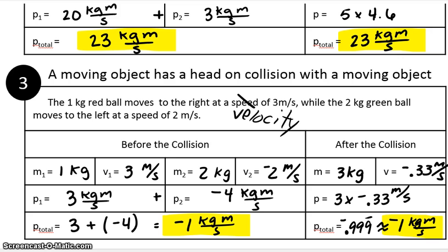Think about it this way: imagine you have $5 in your pocket and your friend has no dollars. You give your friend $3, so now you have $2 and your friend has $3 — there's still $5 accounted for. None of the money was lost. It just changed from one person to another, but it doesn't disappear. The money, and in this case the momentum, is always conserved. Nothing disappears.